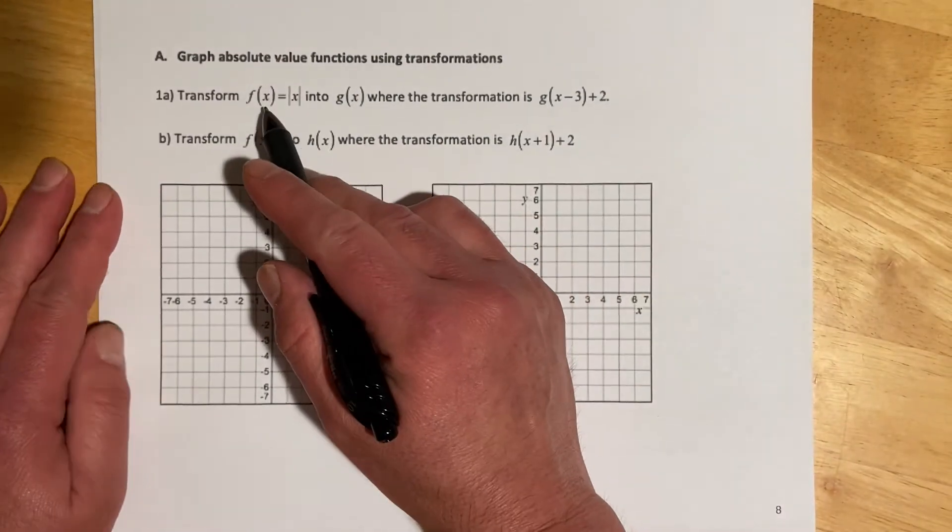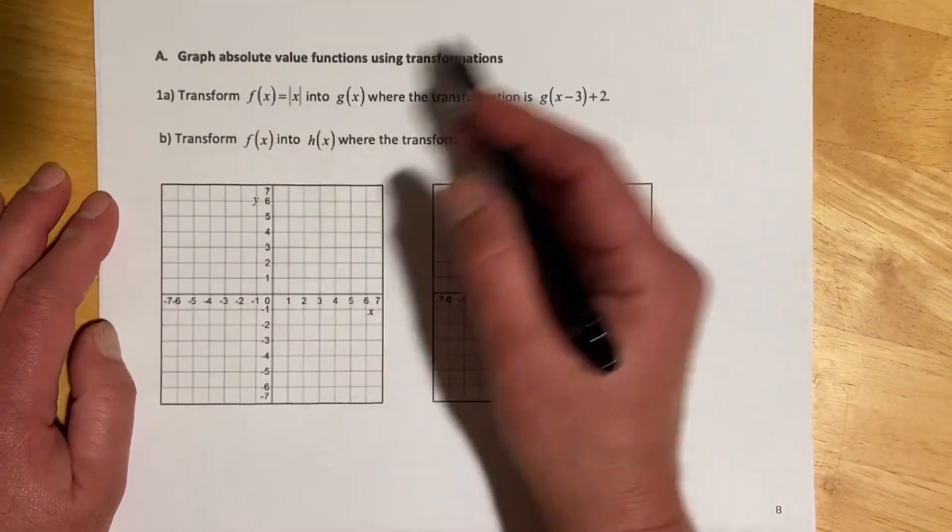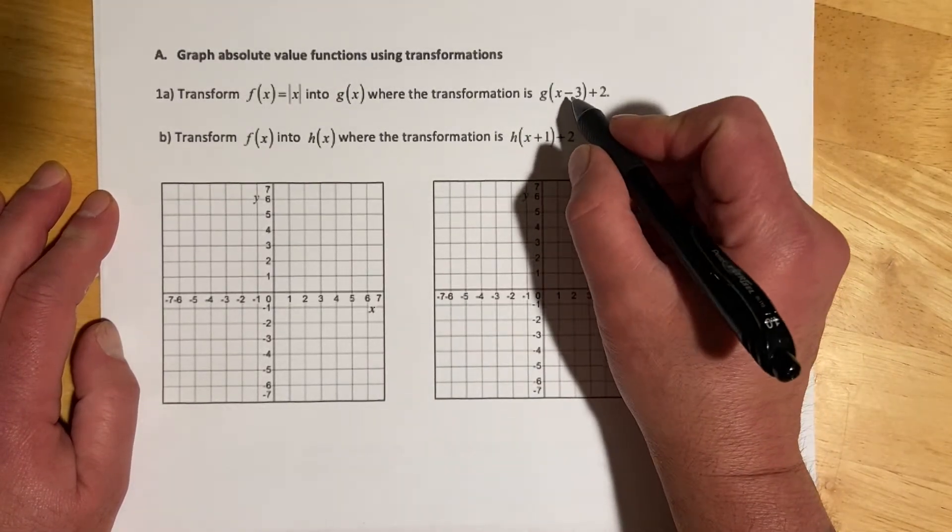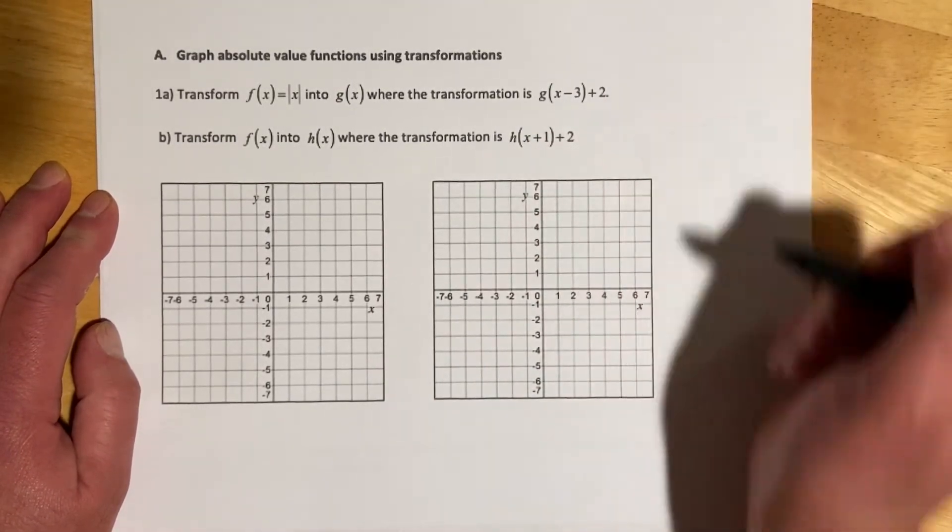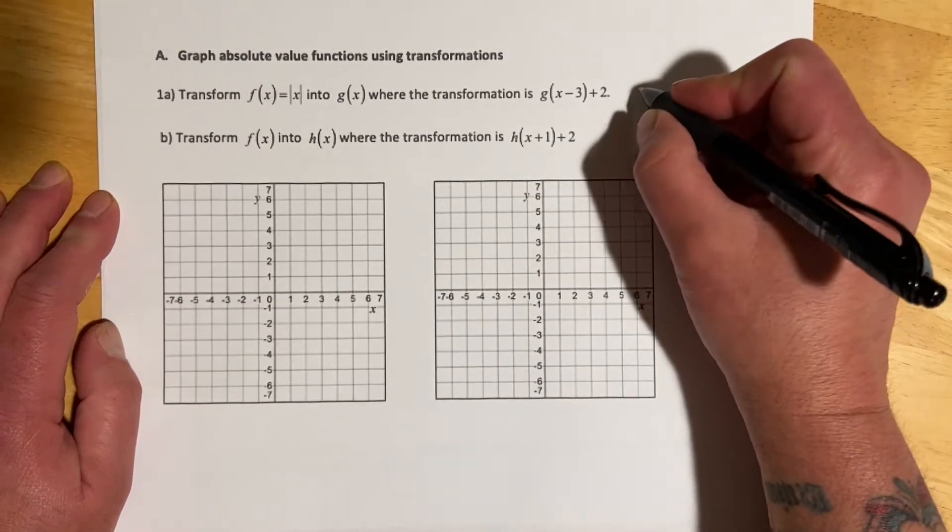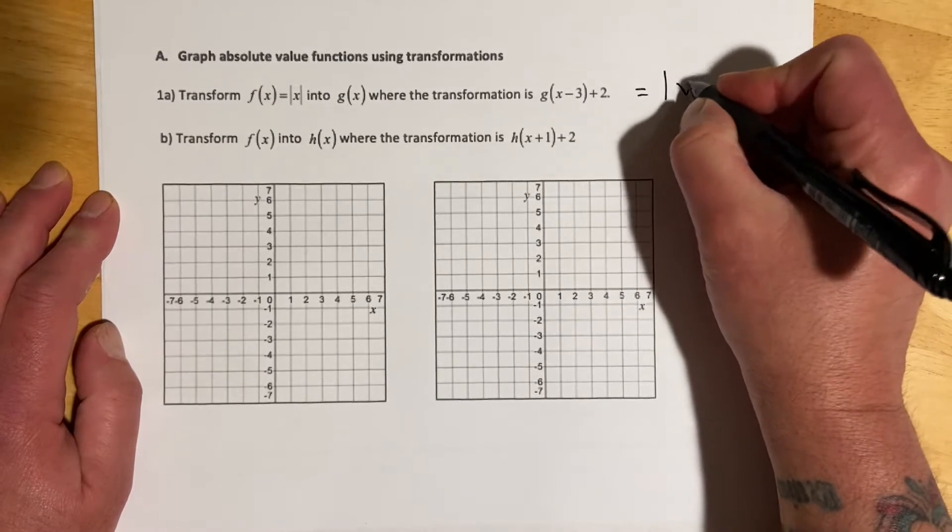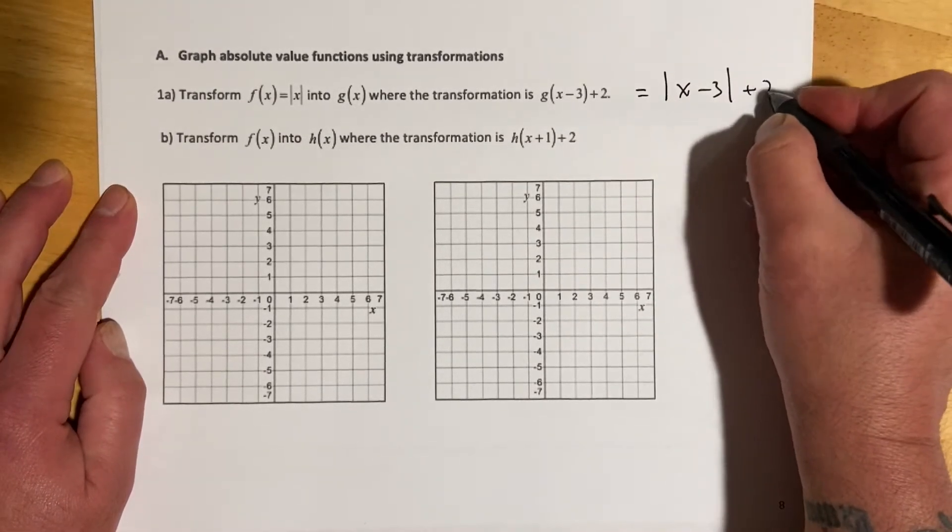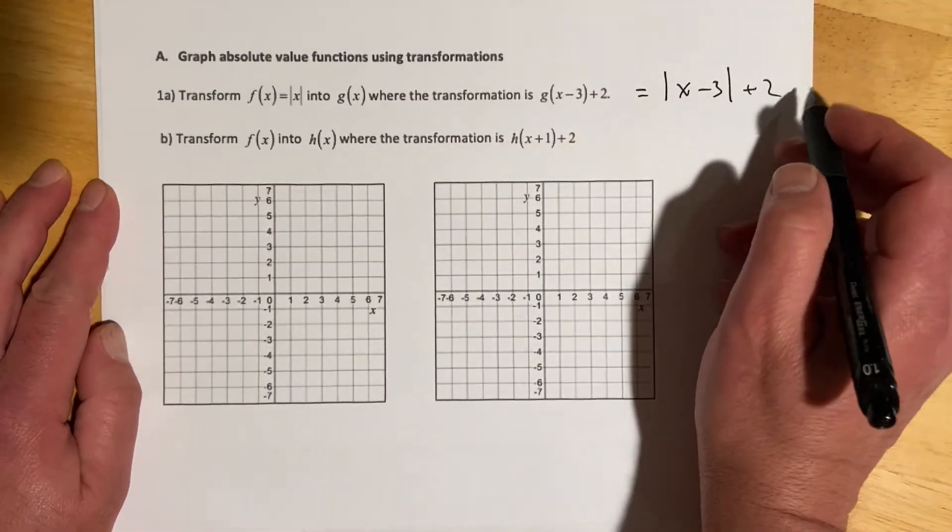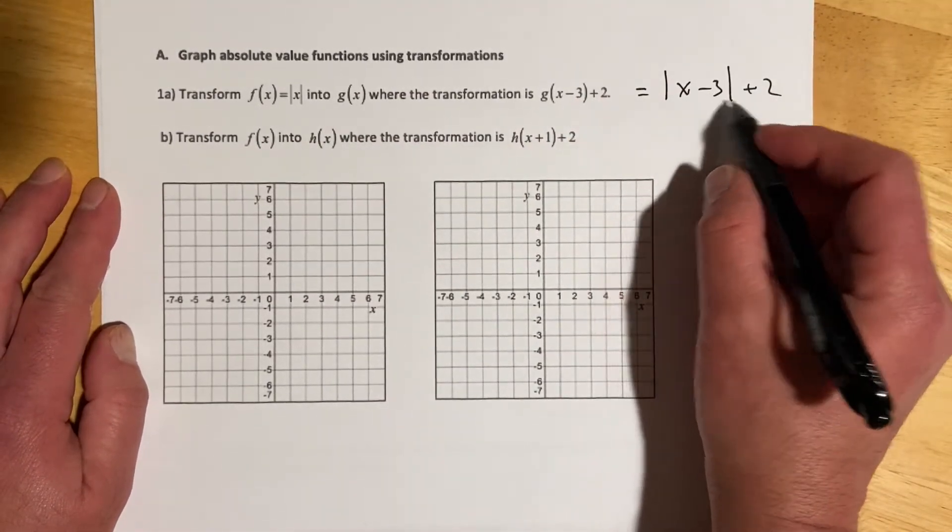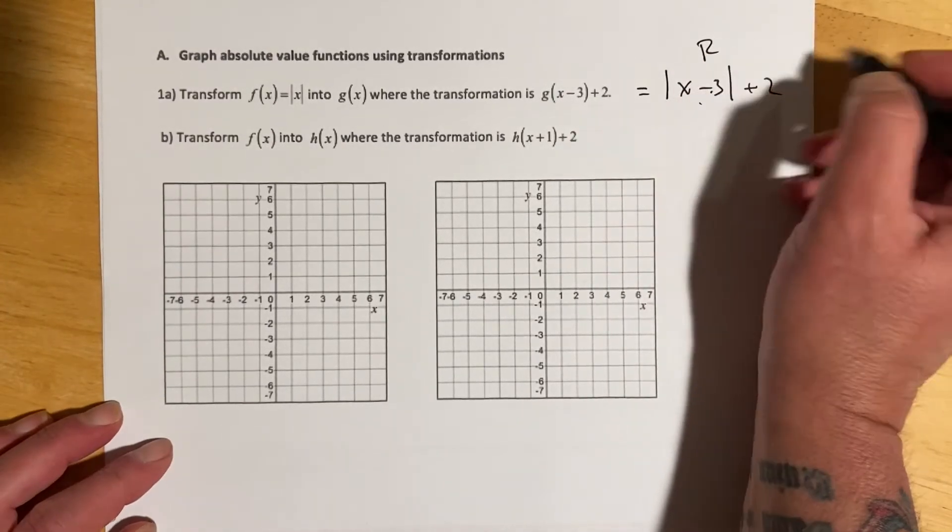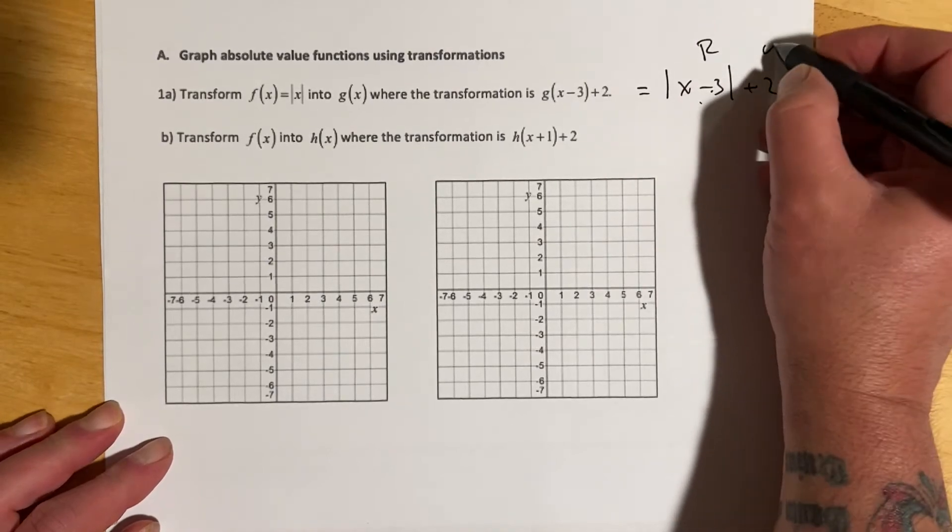This first one transforms absolute value of x where we go minus 3 on the inside plus 2 on the outside. The equation would be g(x) equals absolute value of (x minus 3) plus 2. Minus 3 on the inside is right 3, and plus 2 on the outside is up 2.